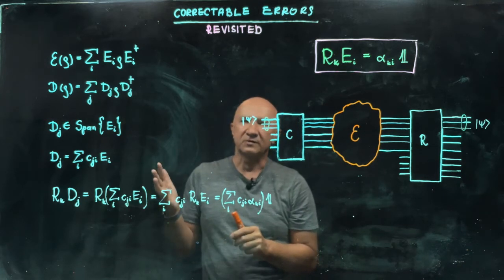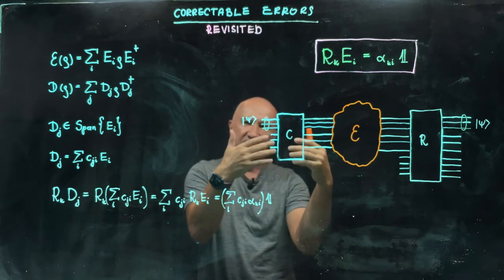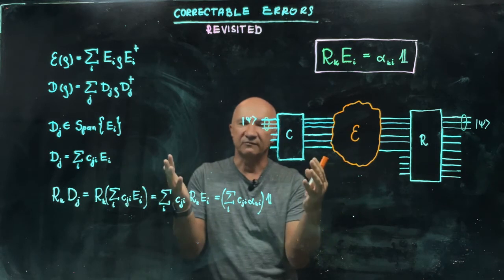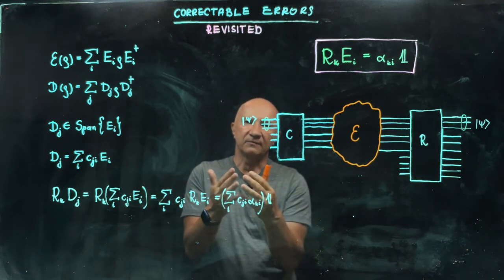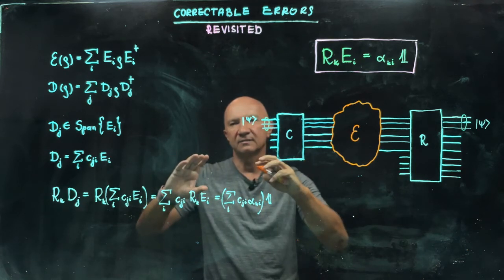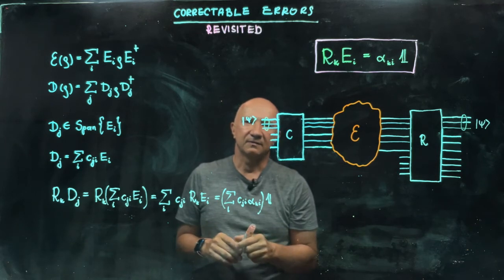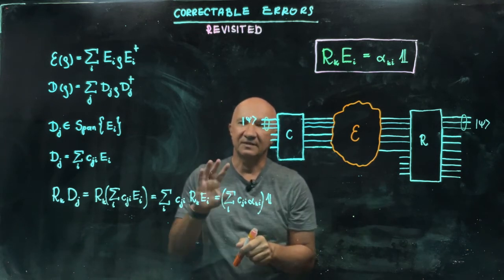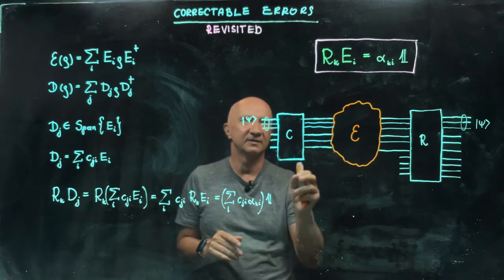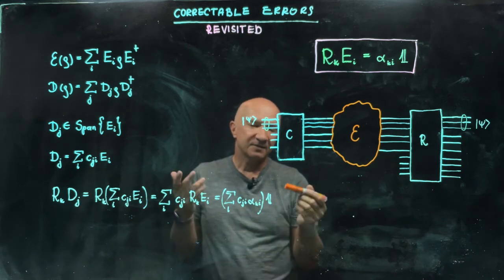So that's good news. So the message is, when we design a scheme with encoding and recovery circuit to correct for a certain class of errors, then the good news is that given the set of errors, we can also look at the linear span of those errors and everything that is in the linear span. Any new error that is in this linear span of errors EI is also correctable. So that's a good thing.